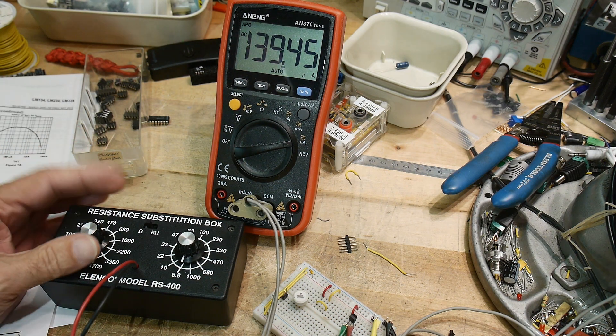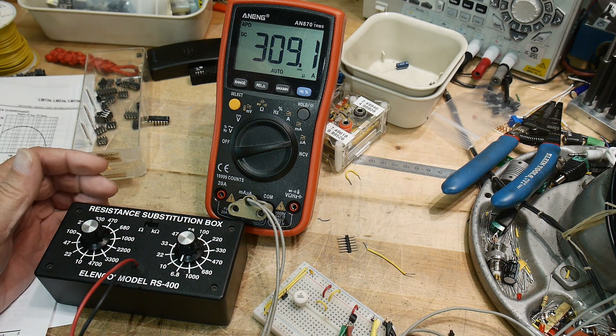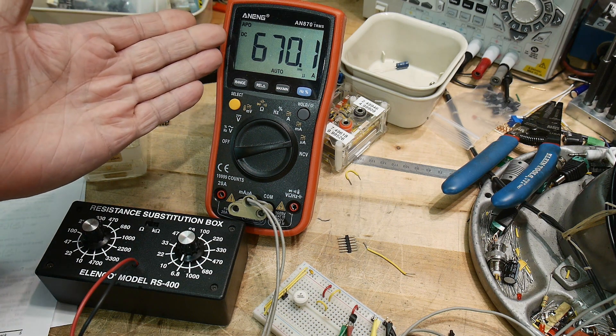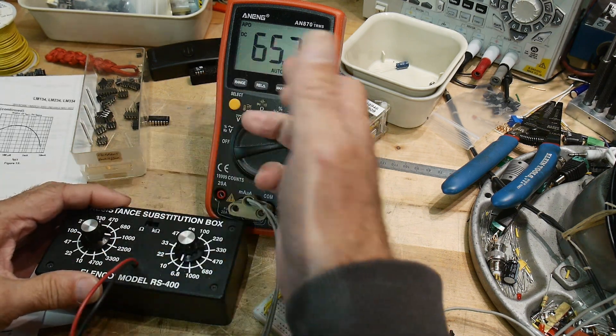740 ohms, 330 ohms, 220 ohms, 100 ohms. 100 ohms, we have 670. And at 1,000, we had 665.